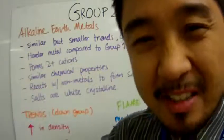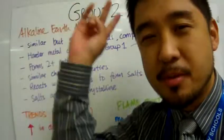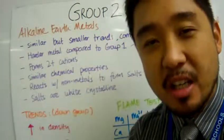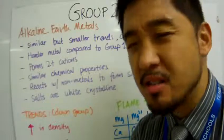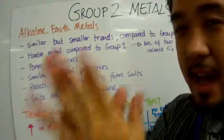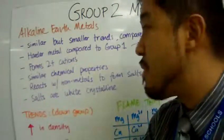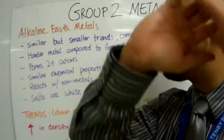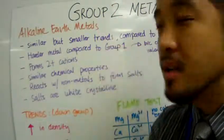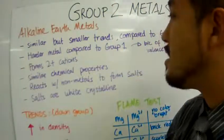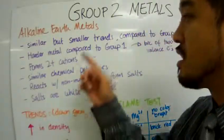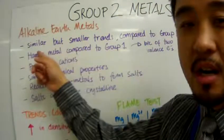We're going to talk about group 2 metals, the alkaline earth metals. Just like alkali metals, alkaline earth metals are very similar, but have a small trend difference when you compare them to alkali metals.